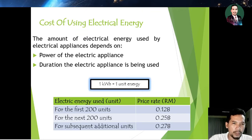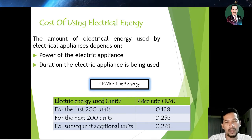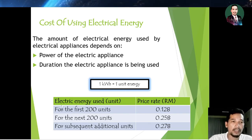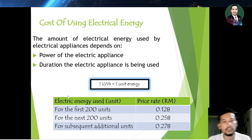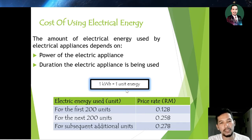The amount of electrical energy used by an electrical appliance depends on two factors. Number one is the power of the electrical appliance, and number two is the duration for which the electrical appliance is being used. One kilowatt-hour is equal to one unit of energy.